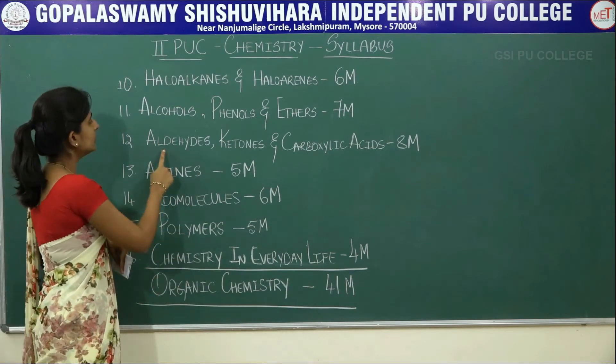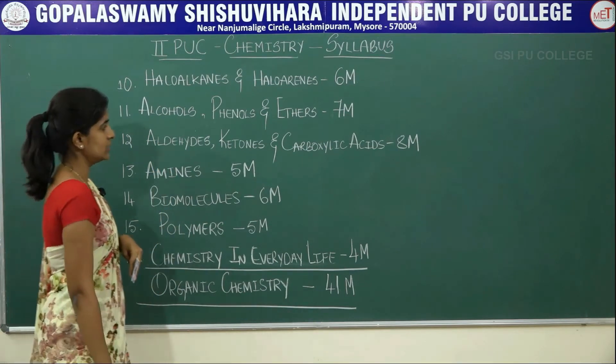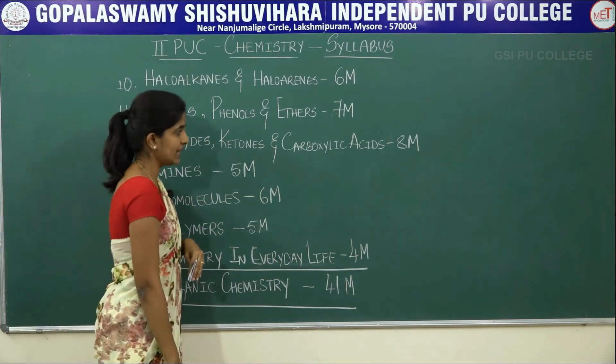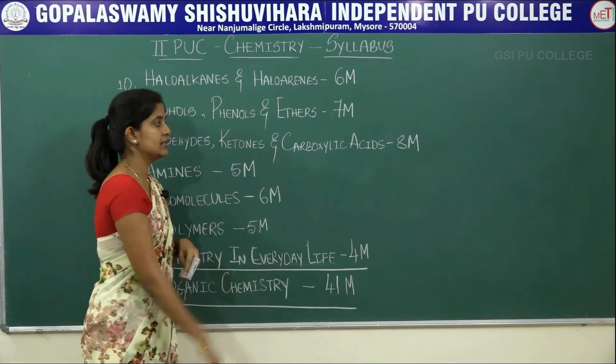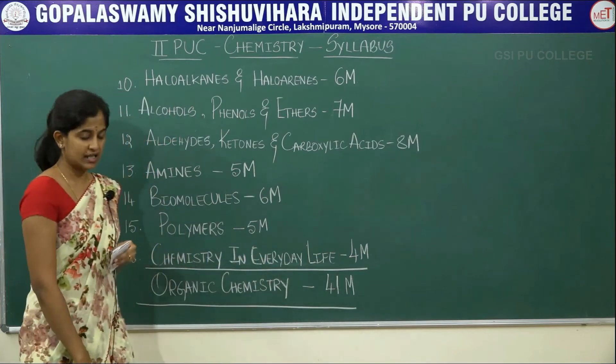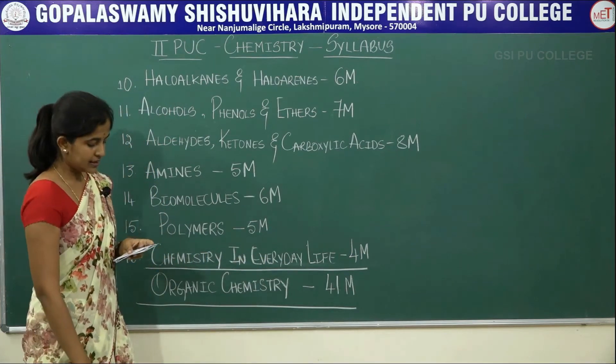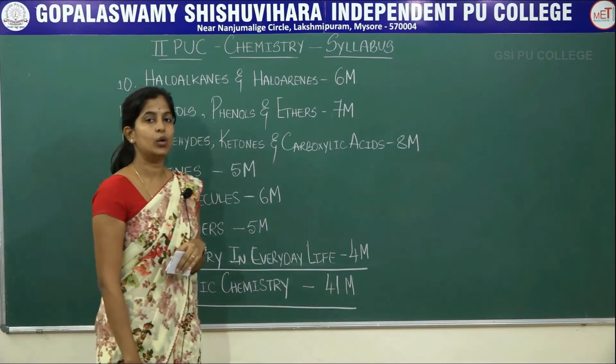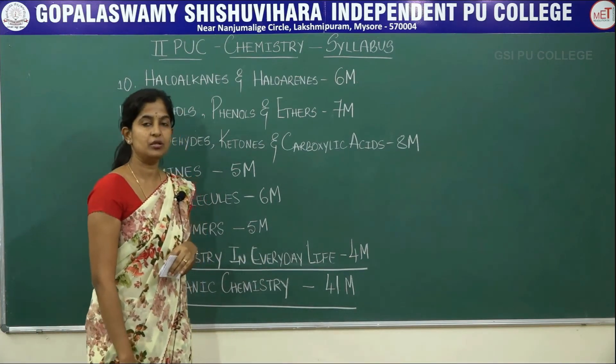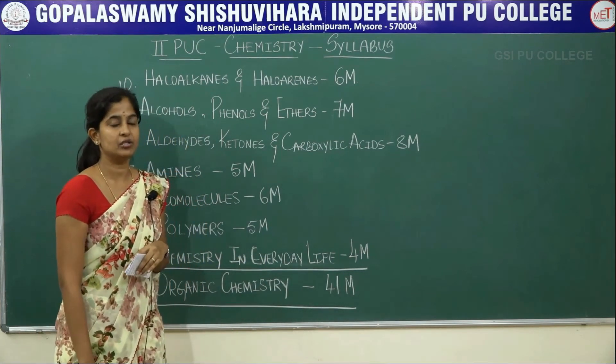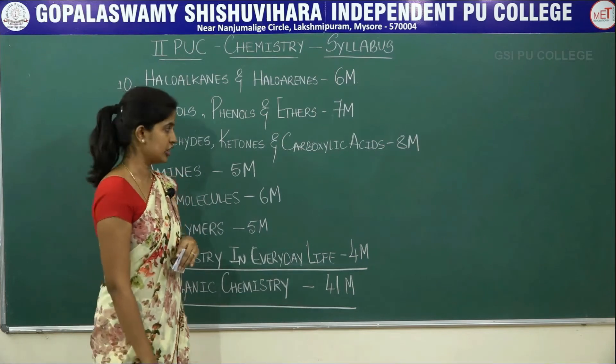The third chapter is aldehydes, ketones, and carboxylic acids. Its total weightage is 8 marks, divided into a 1-mark question, a 2-mark question, and a 5-mark question.